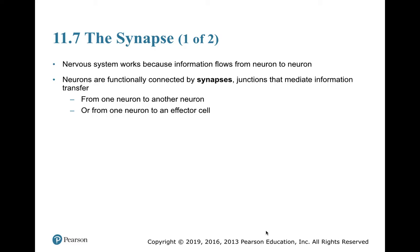Now we're going to get into how neurons talk to one another, starting with the synapse. The synapse shouldn't be entirely new to you — it's a way that two nerves communicate, very similar to how a nerve talked to a muscle cell in the last chapter, except here we'll have two nerves. The nervous system works because information flows from neuron to neuron, and those junctions are connected by synapses.